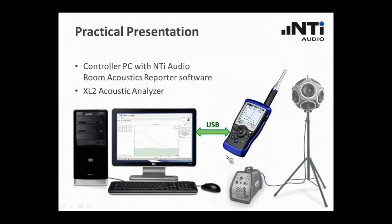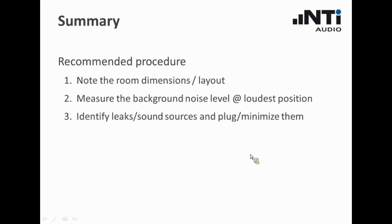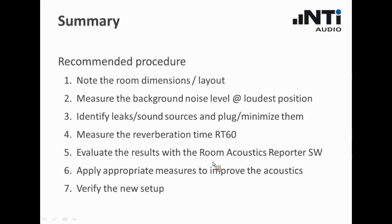Let me get back to my webinar presentation and summarize the typical procedure. The first step would be to note the dimensions of the room, maybe to make a sketch of the layout, so that you can draw in there the place where you have executed your background measurements at the loudest point, etc. Next, you would measure the background noise and if possible minimize the impact of these external noise sources. Then the next step would be to measure the reverberation time in the empty room and add this compensating factor. Evaluate the results with the software that I just showed to you, and also identify possible measures that will assist you to improve the acoustic performance. The last step would be to verify the effect of the measures that you have taken.